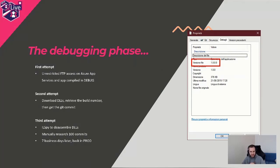We worked again to resolve all the issues and understand what was going on. We started using some tools to disassemble the DLLs and look at the code. We researched 100 commits or more, and after seven business days we were back in production with a newer version that was working.